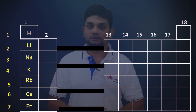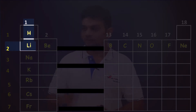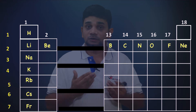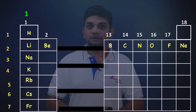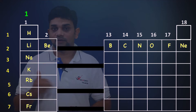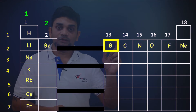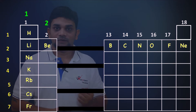Now let's consider the second period elements: lithium, beryllium, boron, carbon, nitrogen, oxygen, fluorine, and neon. Lithium is in group 1, period 2 — it has one electron in the outermost shell, so its valency is 1. Beryllium is in group 2 — it has two electrons in the outermost shell and donates them, so its valency is 2. Boron is in group 13 — three electrons in the outermost shell, so its valency is 3.